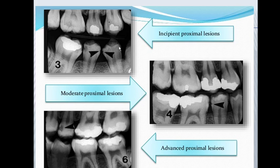Here we have an incipient proximal lesion, then a moderate proximal lesion, and finally an advanced lesion where the radiolucent area is very clearly visible. I hope today's topic was of interest to you. Please read more about this topic because radiographs are really important in the detection of many problems in dentistry and will help in solving many issues.